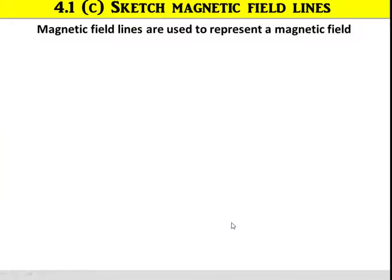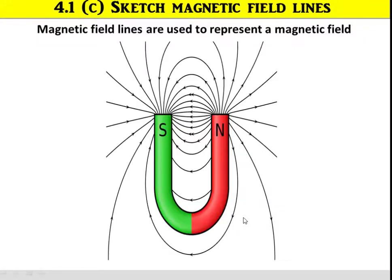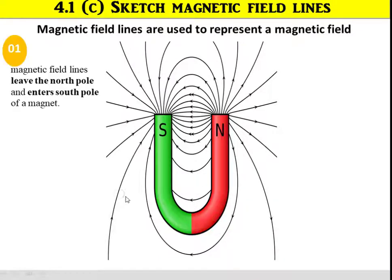Next, we learn how to sketch the magnetic field lines. For magnetic field lines, these are used to represent a magnetic field. You can see here the magnetic field lines for the magnetic field. First, in order to sketch the magnetic field lines, you must make sure that the magnetic field lines leave the North Pole and enter the South Pole of the magnet.